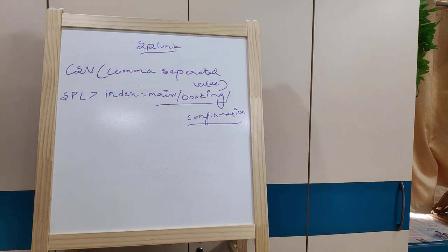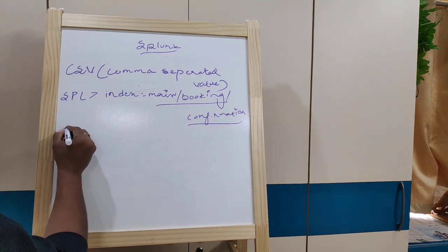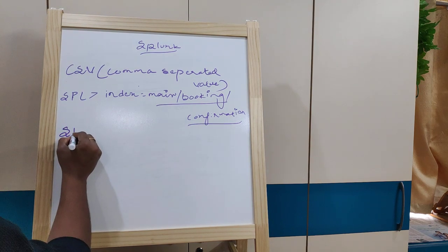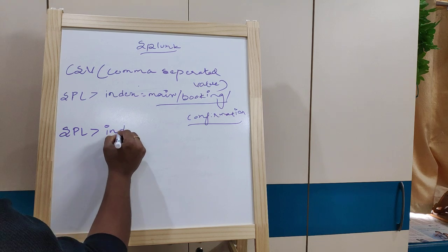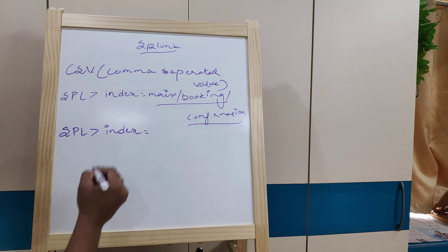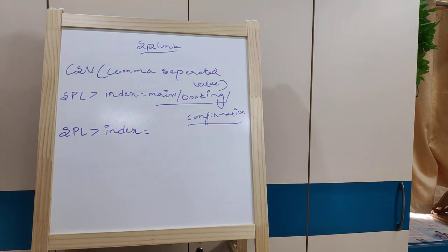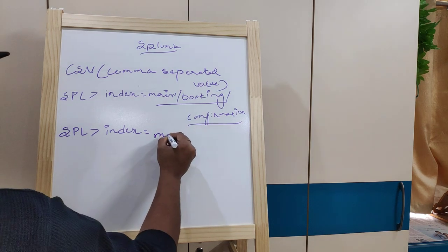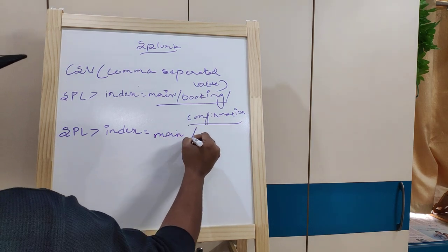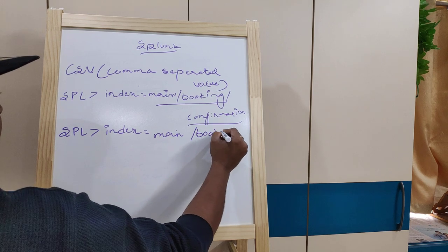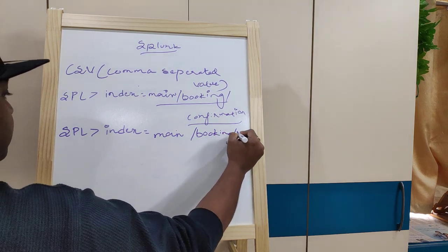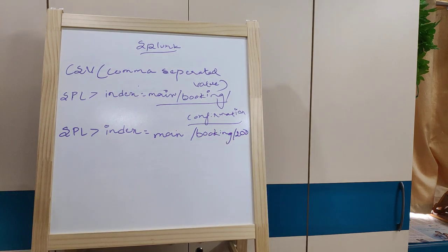Next SPL example: index equal to main, slash booking, slash 200. This filters events from the booking path with a 200 status code response.